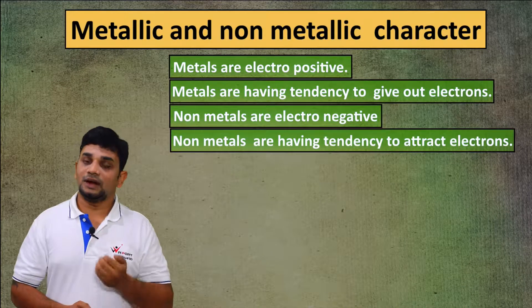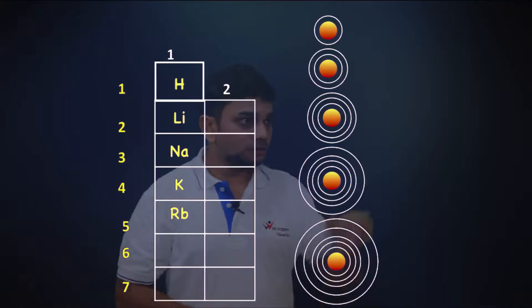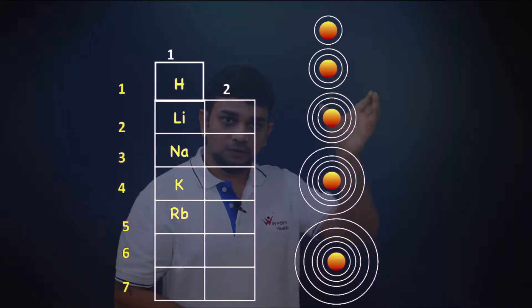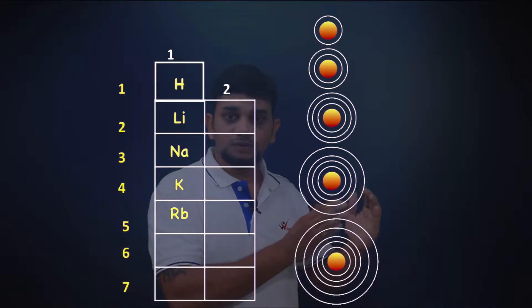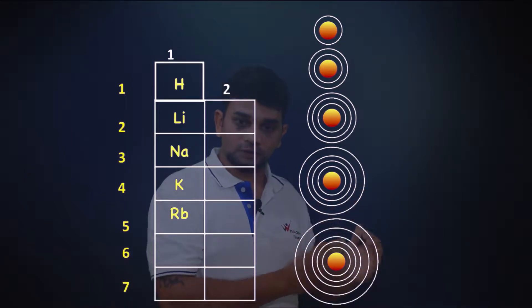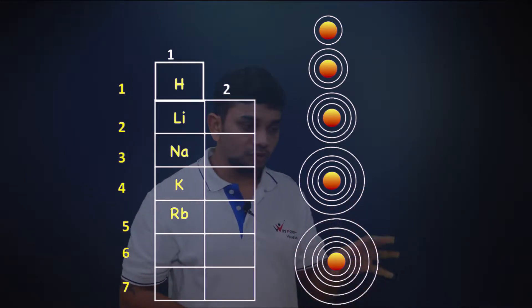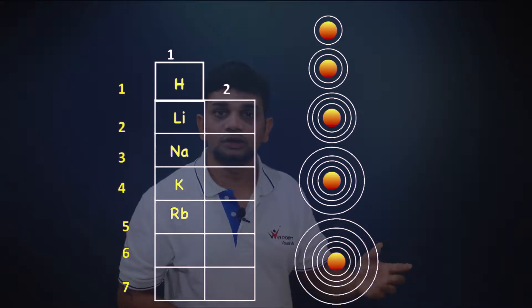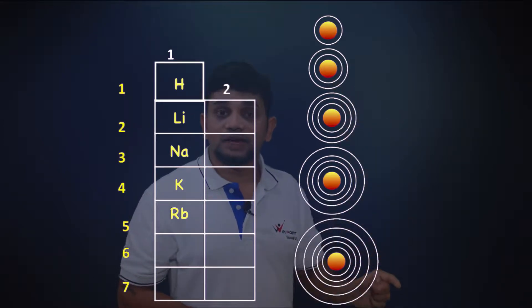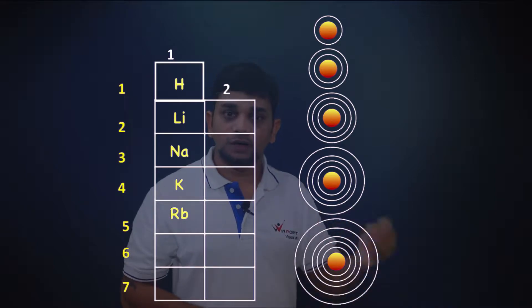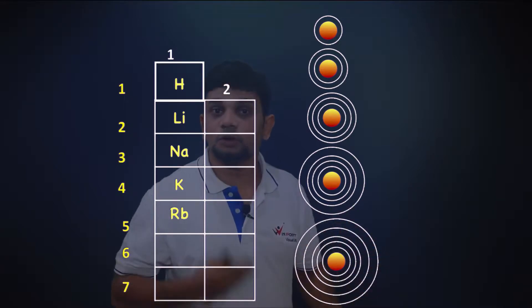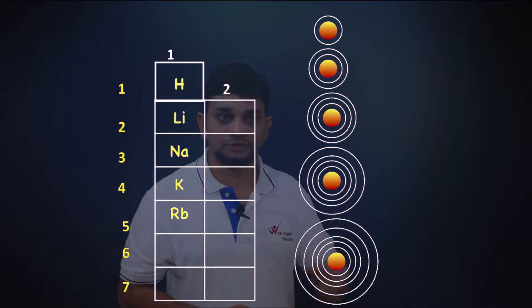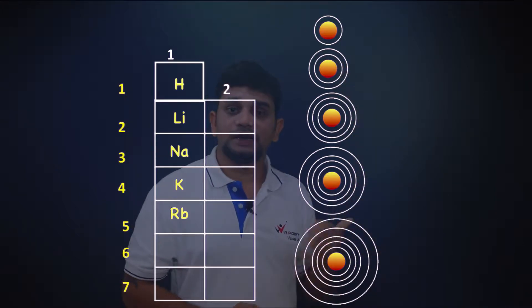Down the group, the size is increasing. The atom at the bottom will donate electrons easily because it is a big atom. Big atoms can donate electrons easily. So down the group, metallic character is increasing. Non-metallic character is just the opposite — it is decreasing down the group.